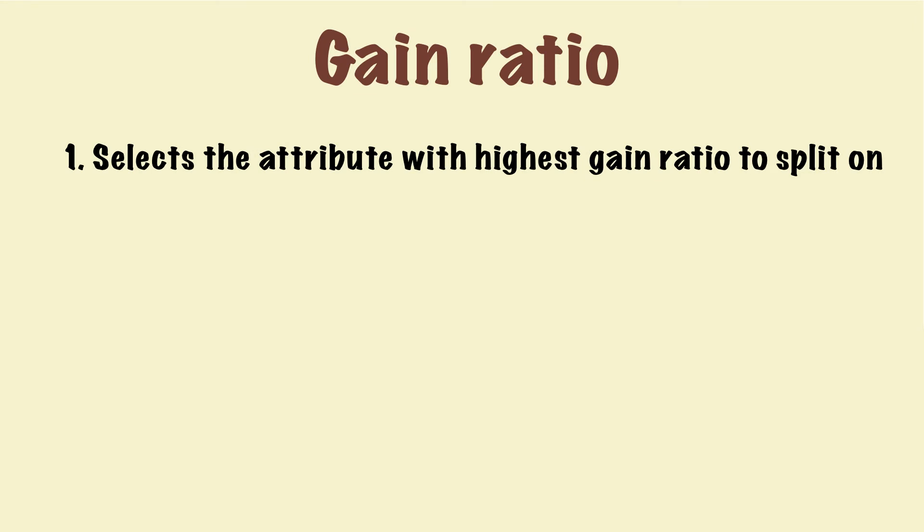Last, I want to remind you of some points. The first one is that, like information gain, we select the attribute with the highest gain ratio to split on. It's because gain ratio is just a normalized version of information gain. So we use the same selection criterion.